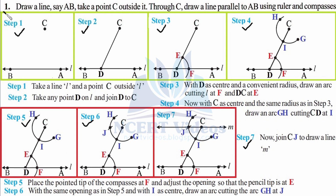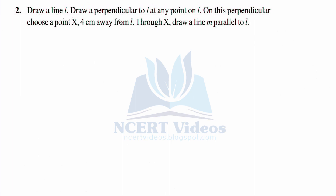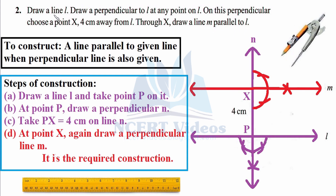Question two: draw a line l, draw a perpendicular to l at any point on l, then on this perpendicular choose a point X four centimeters away from l. Through X draw a line m parallel to l. We draw line l, take a point B on it, draw a perpendicular at B, measure four centimeters along it to find point X, then draw another line through X parallel to l.